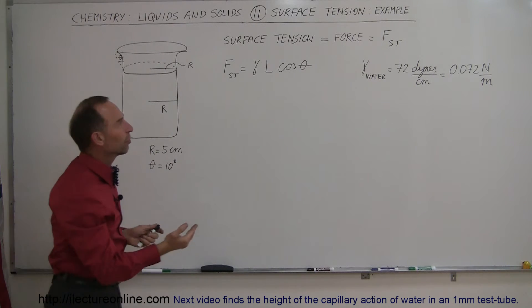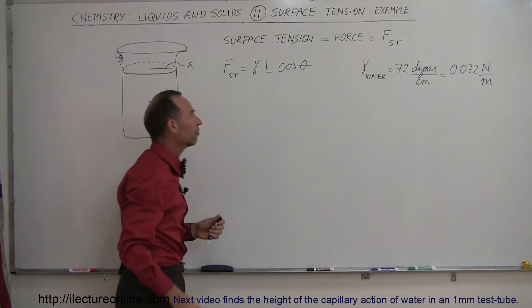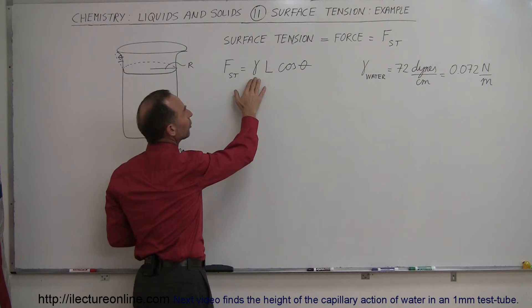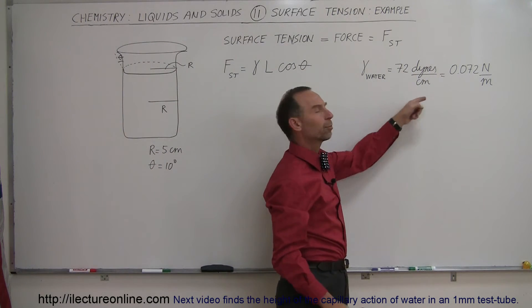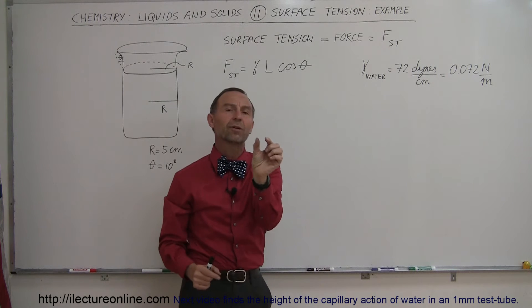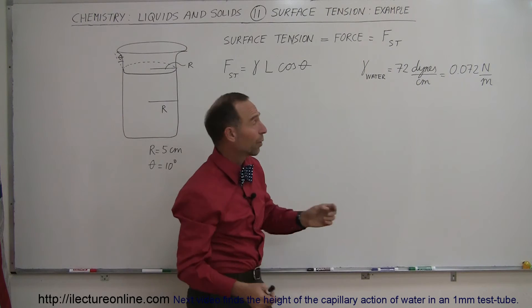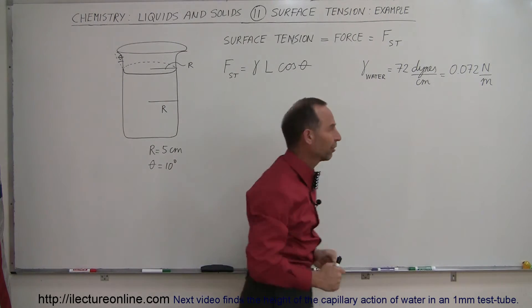The surface tension typically is associated with a force, we write it as F sub ST for the surface tension force. And it's usually associated with what we call the coefficient of surface tension, which for water is 72 dynes per centimeter. So to break through one centimeter of surface, you have to push down with a force of 72 dynes, which equates to 0.072 newtons per meter of surface.